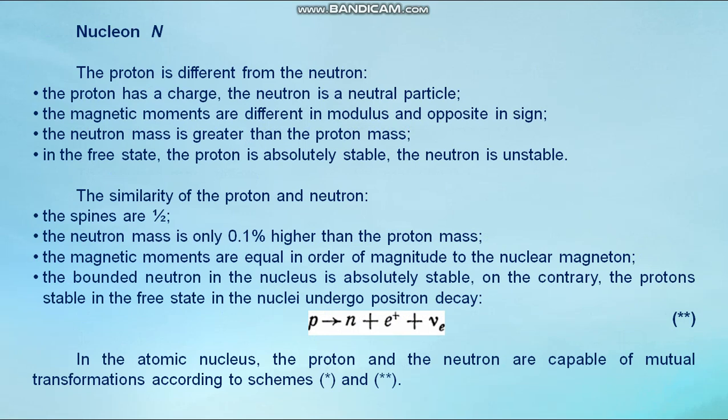The similarity of the proton and neutron: the spins are one half. The neutron mass is only 0.1% higher than the proton mass. The magnetic moments are equal in order of magnitude to the nuclear magneton. The bounded neutron in the nucleus is absolutely stable. On the contrary, the protons stable in the free state in the nuclei undergo positron decay. In the atomic nucleus, the proton and the neutron are capable of mutual transformations according to these schemes.